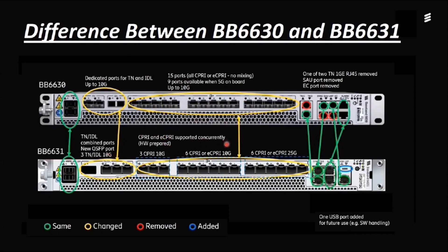Another difference between 2630 and 2631 is that CP and ECP are supported concurrently on the hardware. In 2631, we can see three DNG ports, plus two CP and six CP or ECP at 10G. Another six CP or ECP supports 4.5G. For the 2630, it supports only up to DNG, while the 2631 supports both DNG and PNG with 25G bandwidth support. So the 2631 offers more bandwidth advantage than the 2630.